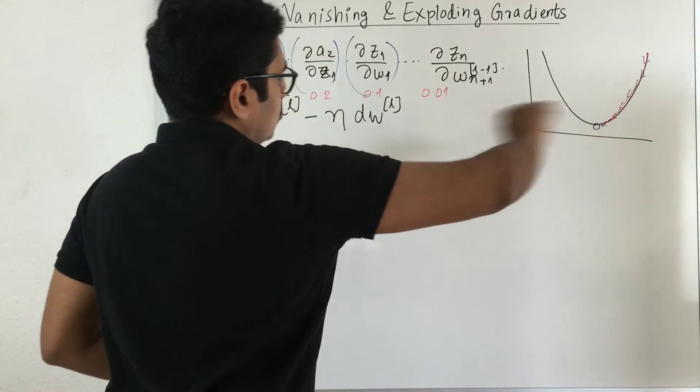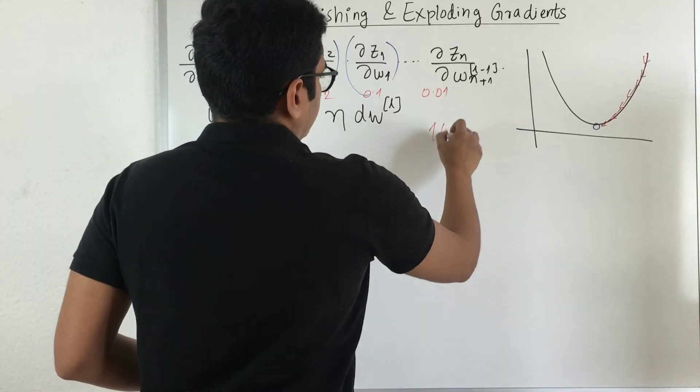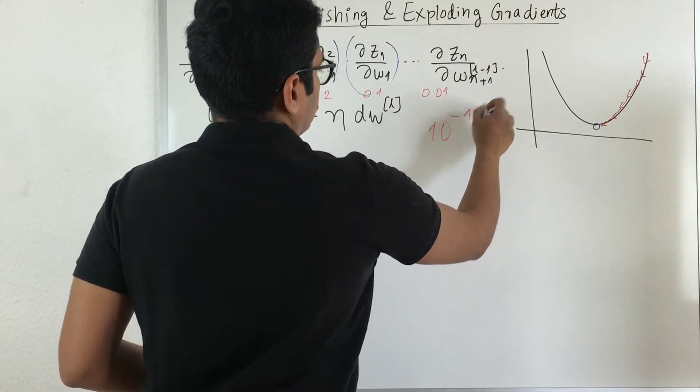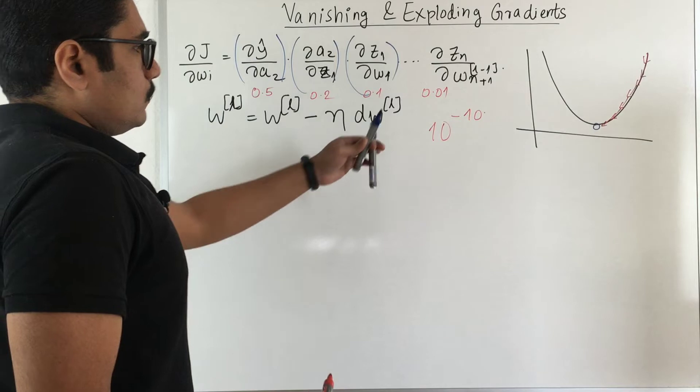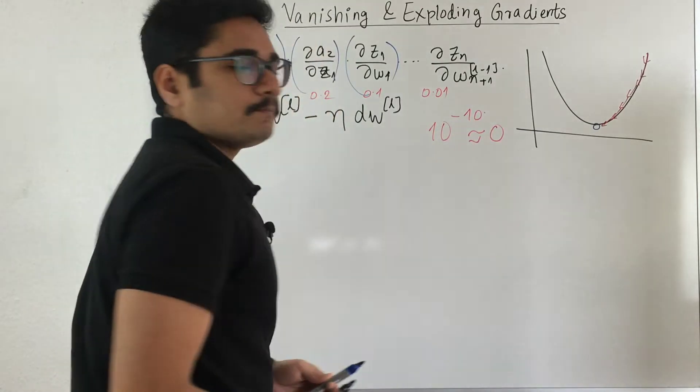So now say all the multiplications of whatever gradients we have done so far resulted into 10 raised to minus 10 value. So what this essentially means is approximately equal to 0.